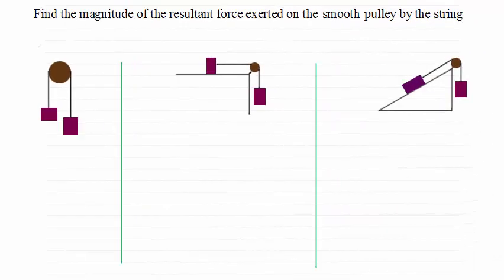Hi, welcome to this tutorial on finding the resultant force exerted on a smooth pulley by two particles connected by a string. Now here I have three common types of questions that you're likely to see. In the first diagram we've got two particles hanging vertically below the pulley.